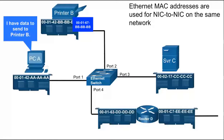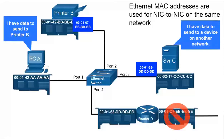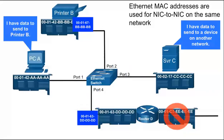Router D's Ethernet NIC with the address ending in all E's is used to communicate with devices on a separate network. This NIC cannot be reached by devices on the other LAN, such as PCA. When Server C sends a message for a device on another network, it will send the message to Router D's MAC address ending in all D's. Router D will then forward this message on the appropriate interface towards the destination device.